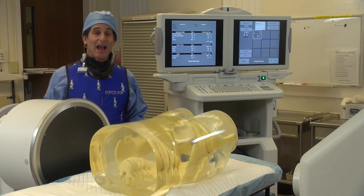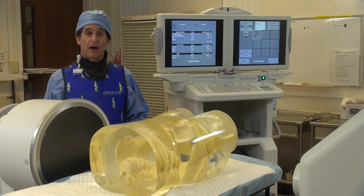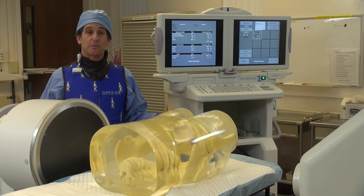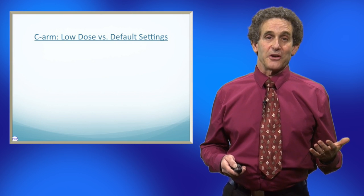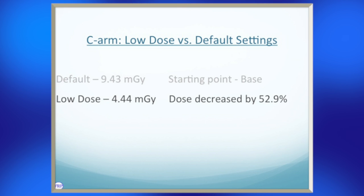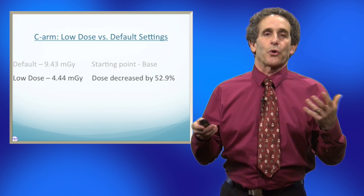So it's a spectacular way of saving dose to your patient. You just have to sometimes worry that it might be a little mottled. But when it's not, you've saved half the dose to your patient and everybody in the room — so that's definitely the way to go. Here was the low-dose versus default settings with the C-arm: default came out at 9.43 milligray, and when we went down to low-dose, it dropped to 4.44 milligray. The dose decrease was 52.9% — basically cut it in half. And historically, that's always what it'll do.